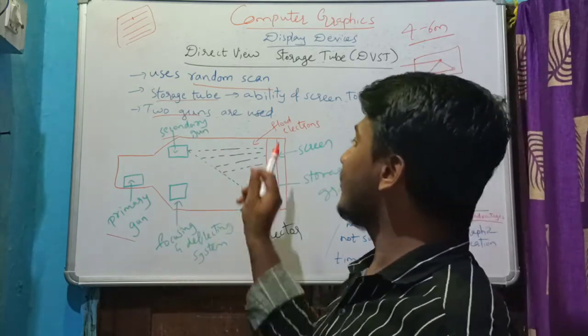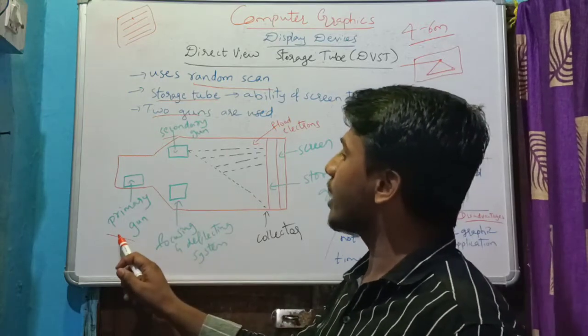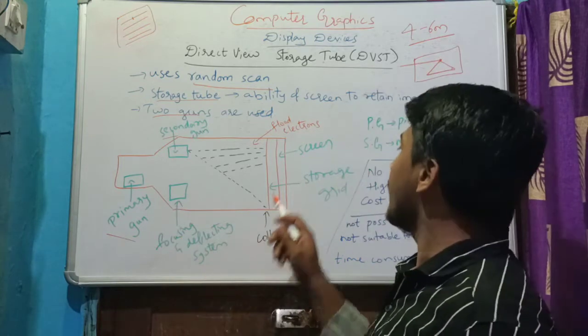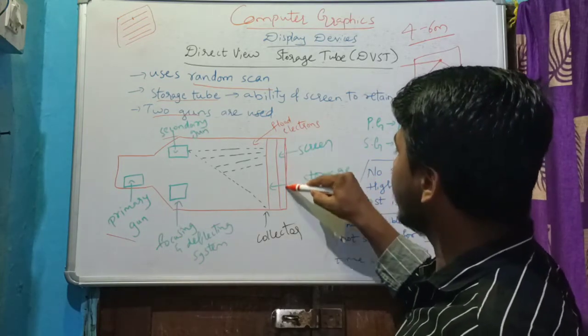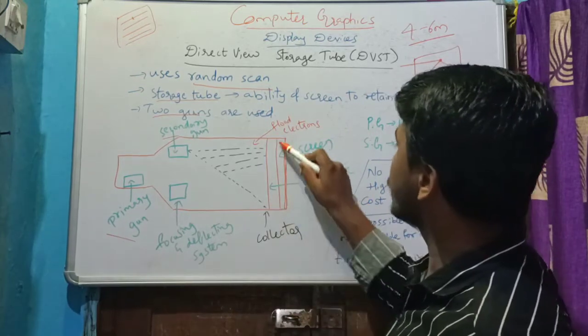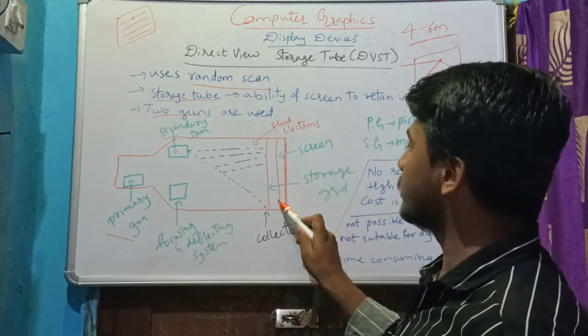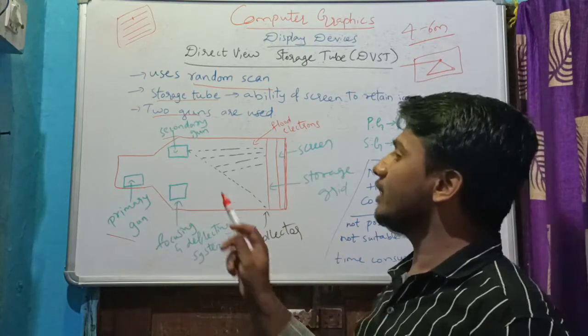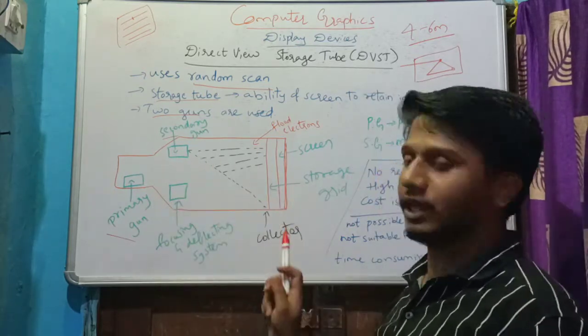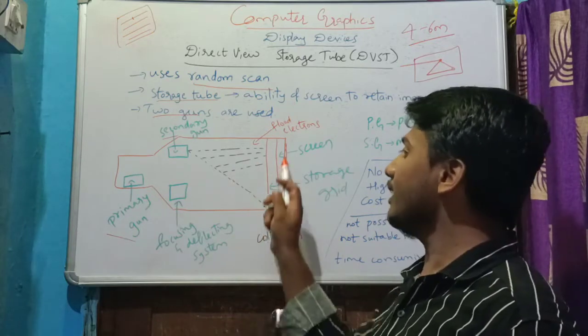You can see this diagram consisting of primary gun and this focusing and deflecting system, and this is the screen. There is a storage grid and collector. So whenever a beam of electrons are produced, when they hit the screen, that image will be stored in this collector.